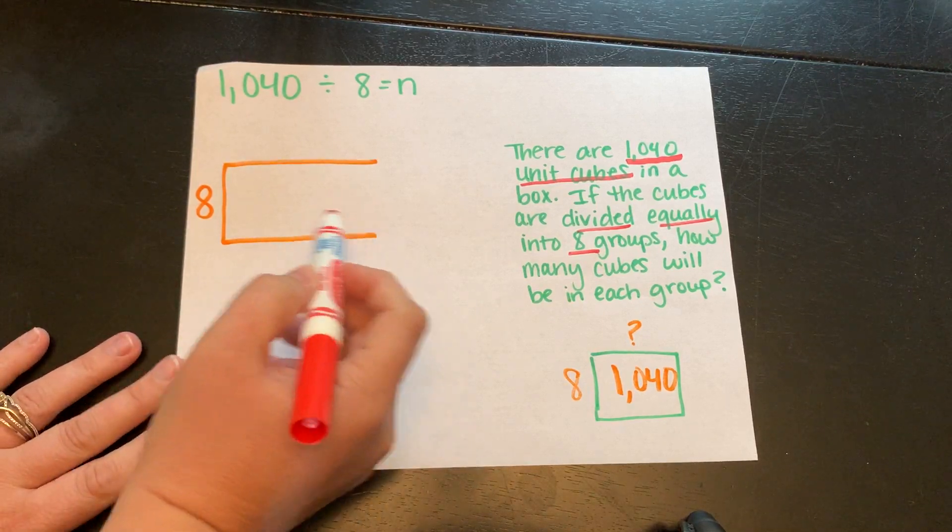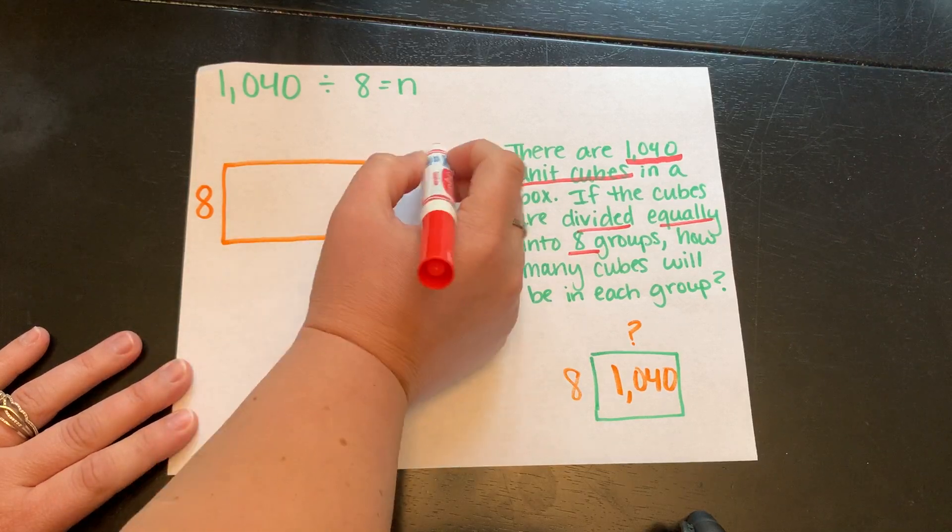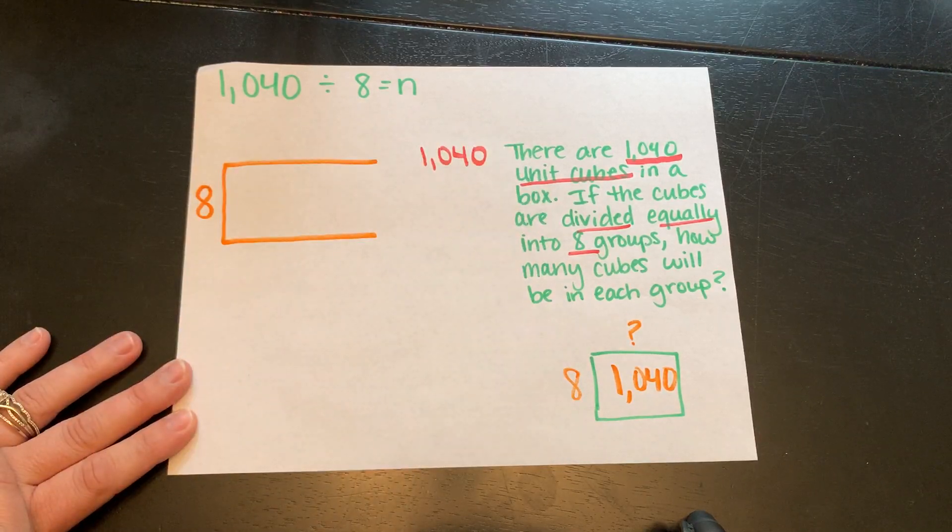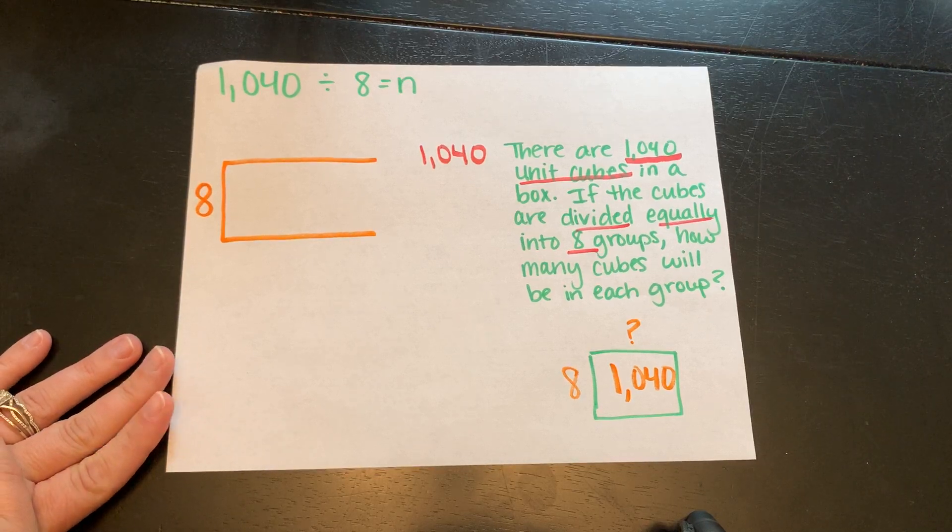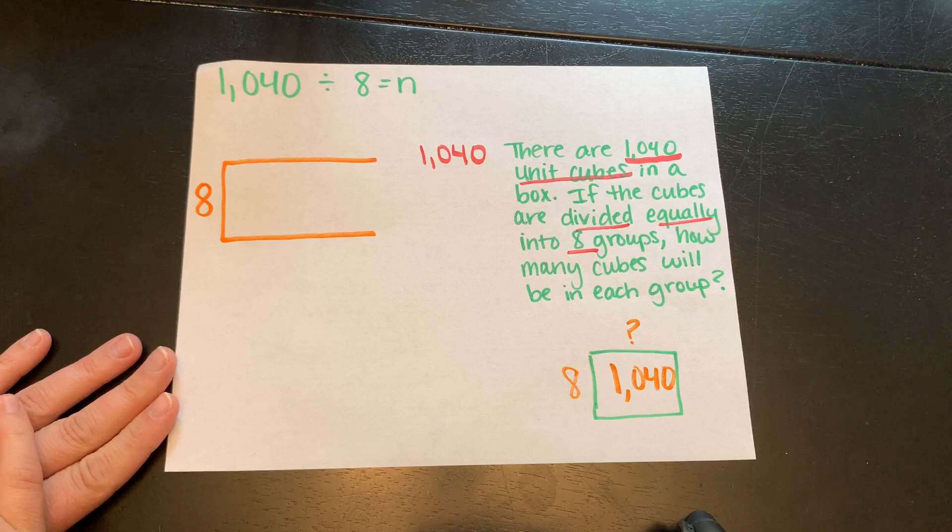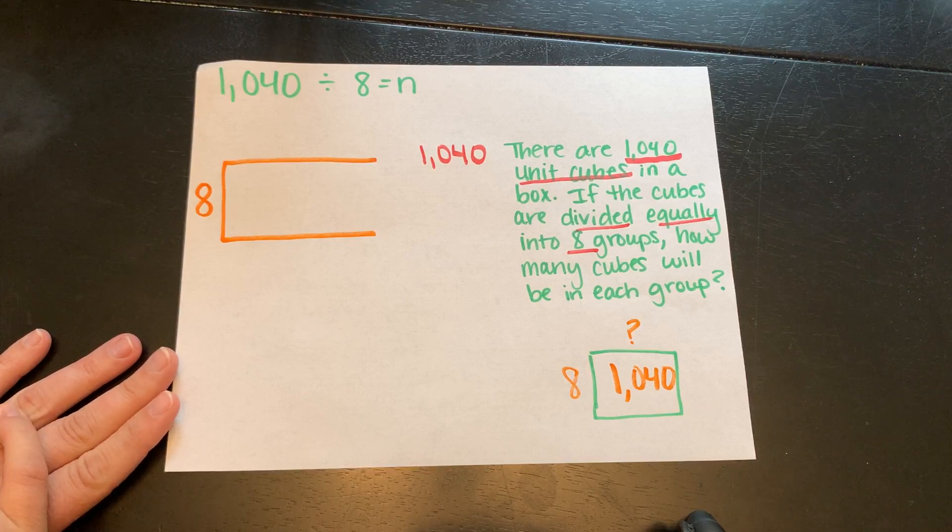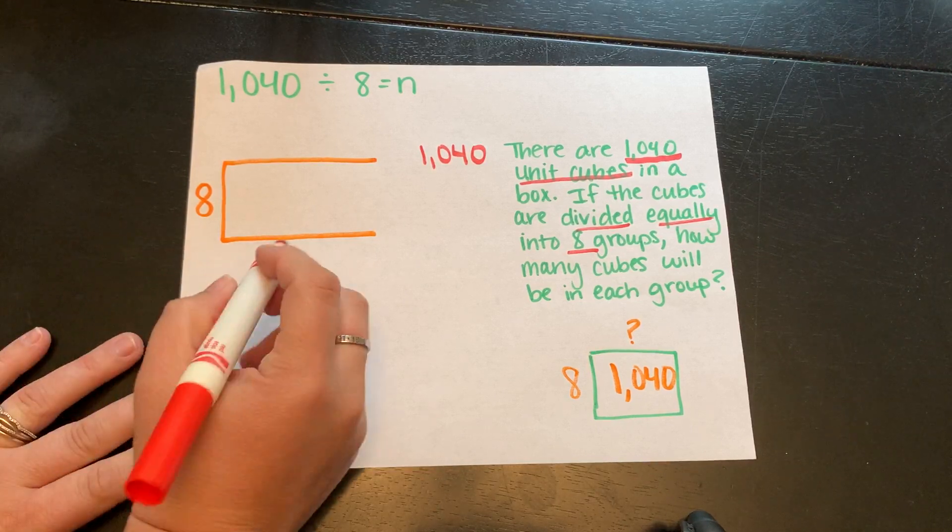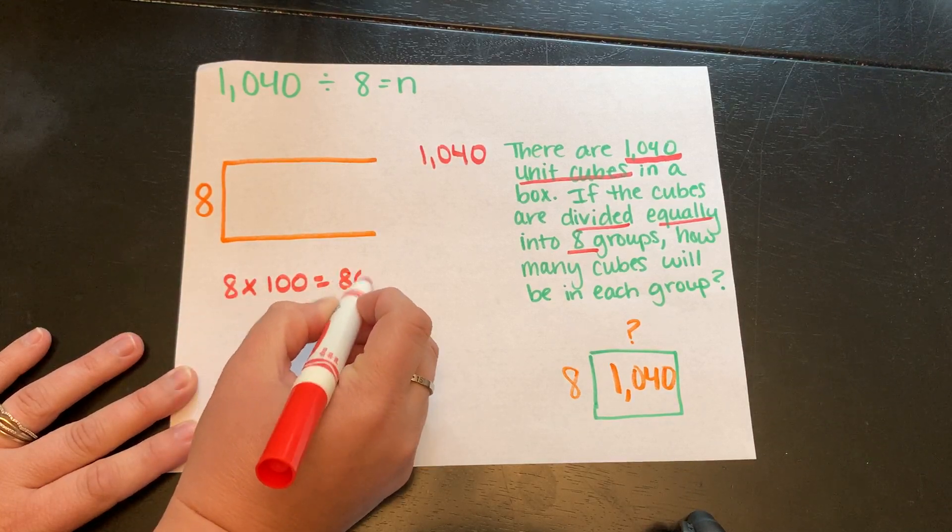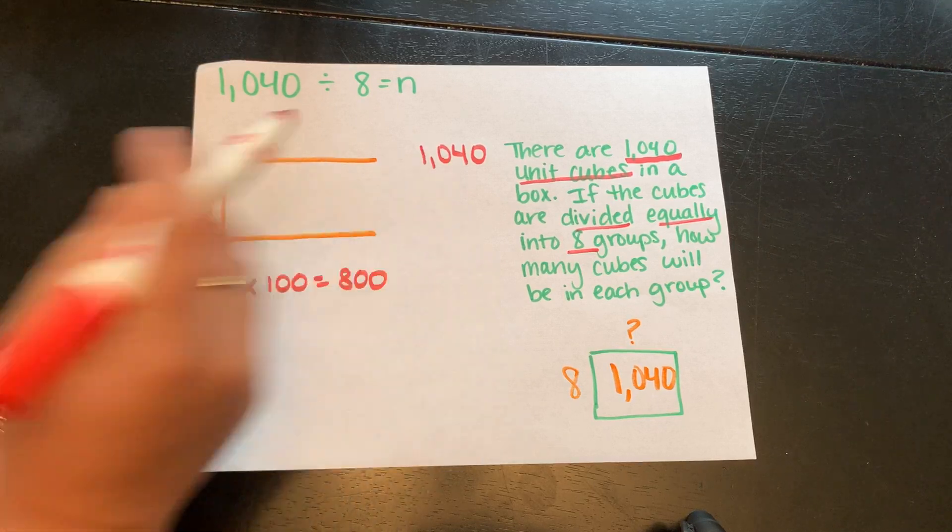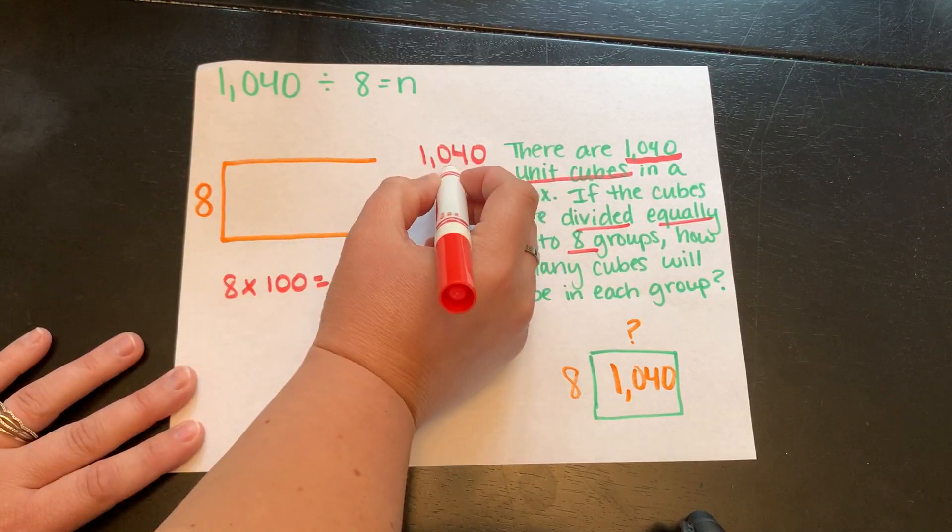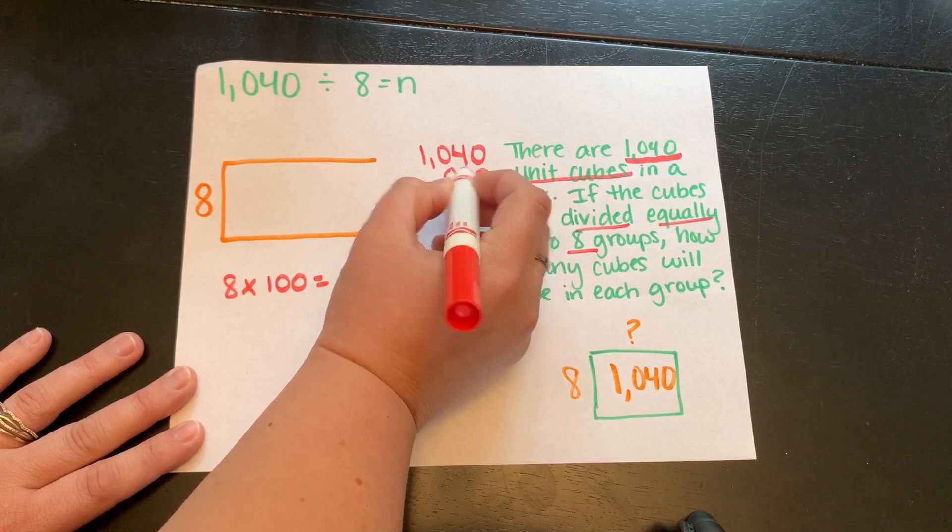Over here with my array, I know I'm starting with 1,040. That is the total amount that I have. Again, let's go back and think friendly numbers. You can use your multiplication chart if you have that in front of you. When I'm thinking of tens and hundreds, let's see, 8 times 100. That's 800. Can I get a group of 800 out of 1,040? I sure can.